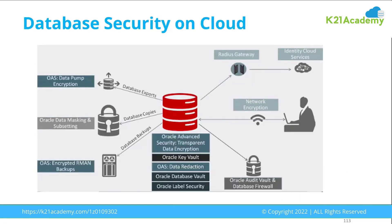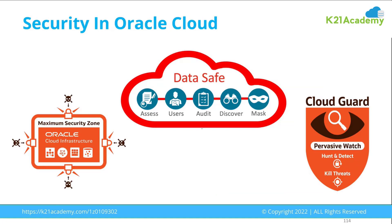Whatever security features exist on-premise are also applicable on cloud. At Oracle OpenWorld 2019, Oracle announced three new security services: Data Safe, which is already available in Oracle Public Cloud, and two upcoming features — Maximum Security Zone and Cloud Guard. If you're part of the DBA to Cloud DBA training program, these new features — Data Safe, Cloud Guard, and Maximum Security Zone — will be added to the training. The next batch starts November 30th.